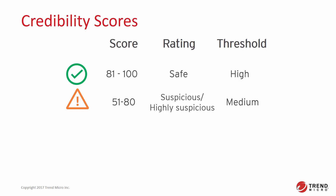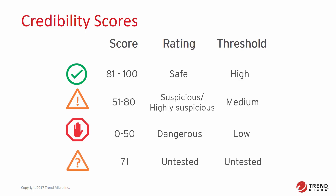A score of 51 to 80 also means the site has been associated with spam or has a history of being compromised, and the security level will be set to medium. Sites with a score between 0 and 50 are considered dangerous — these websites have been verified to be a phishing page or a source of malware or spyware, and a score of 50 or below is considered known malicious, so the security threshold will be set to low. Pages that have not yet been tested by Trend Micro will have a score of 71.